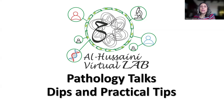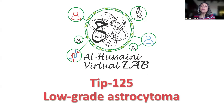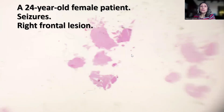Hello and welcome to our Hussaini Virtual Lab Pathology Talks Tips and Practical Tips. What I'm going to be sharing with you today is a nice example of a low-grade astrocytoma. This is a case of a 24-year-old female patient who presented with recurrent seizures and was found to have on imaging a small non-enhancing right frontal lesion.